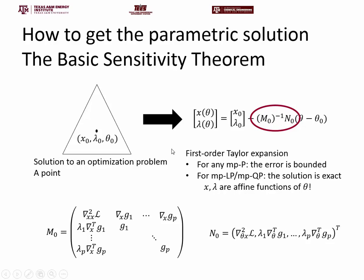The corollary is that for mpLP and mpQP problems, the solution is exact — lambda and x are affine functions of theta. So for LP and QP problems, given a point, you can determine how the solution behaves around that point, and that behavior is an affine function of the parameter. The matrices M0 and N0 — and the Lagrangian function — can be calculated; they are essentially the result of the first-order Taylor expansion.